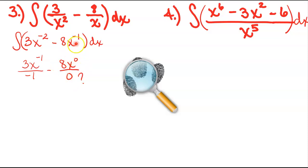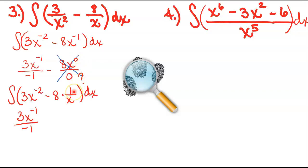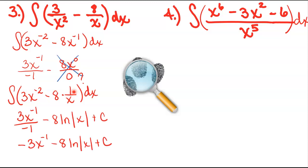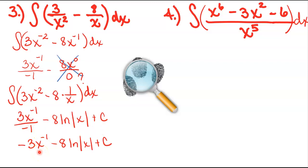If you remember, x to the negative 1 is the same thing as 1 over x. The antiderivative of 1 over x is ln|x|. So I would do the first piece the same way — add 1 to get negative 1 and divide by that same value. I can bring my constant straight down, and then the antiderivative of 1 over x is ln absolute value x. Then we've got our plus c. We could just divide by this negative 1 here to clean this up a little bit.